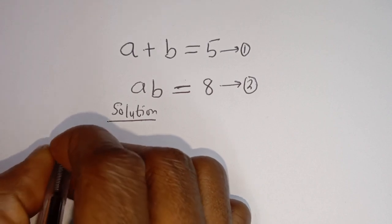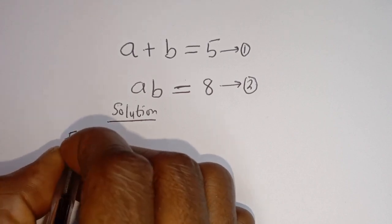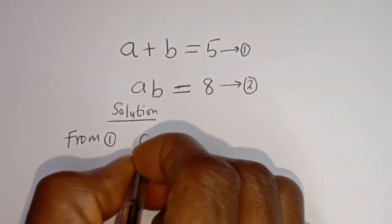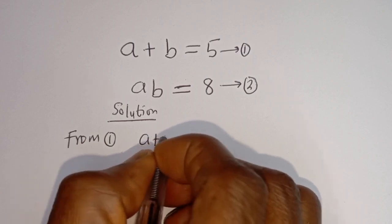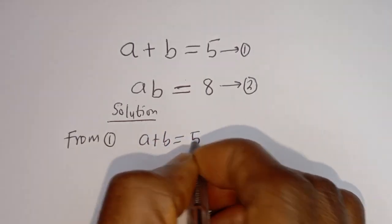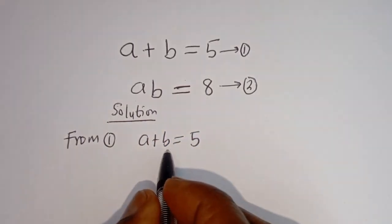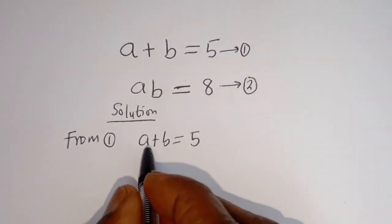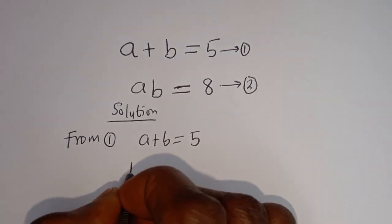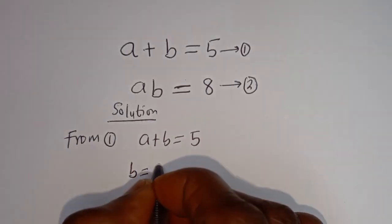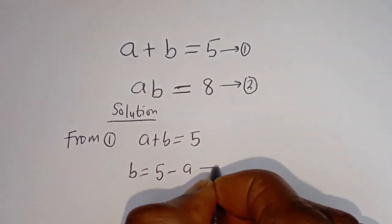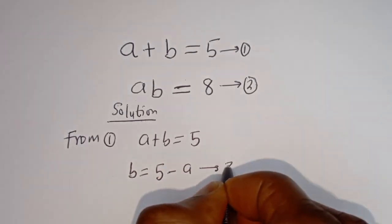From equation 1, A plus B is equal to 5 — let's call this equation 1. AB is equal to 8 — let's call this equation 2. From equation 1, let's make B the subject of the formula — you may as well make A the subject. B is equal to 5 minus A. This is equation 3.